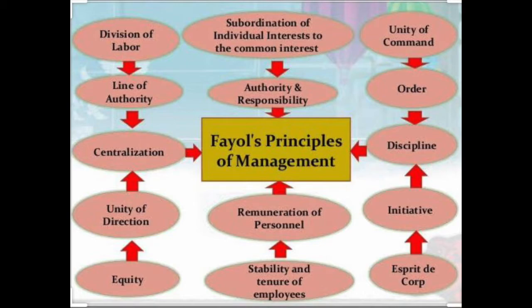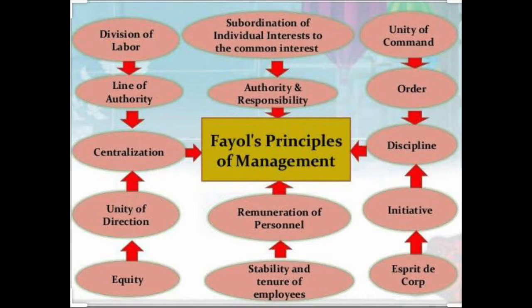The next principle is authority and responsibility. Authority is basically the right to give orders — if some person is being given some work, he should also be given the right to take decisions. That is what authority is. If I am giving some responsibility to somebody, I should give him the authority to take decisions to complete that responsibility. This principle states that if you are giving some kind of responsibility to a person, you should also give the authority to carry it out, because responsibility goes with accountability — answerability. If you have been given a task, you are answerable to the person who gave it to you, and that answerability is only possible if you are given the authority.